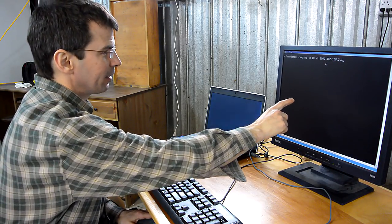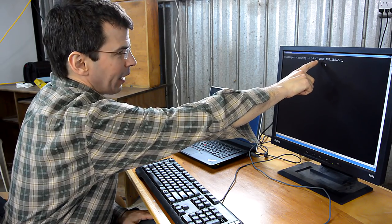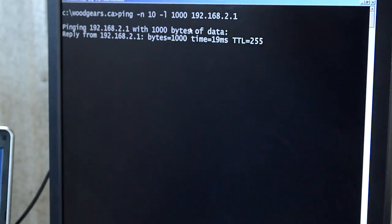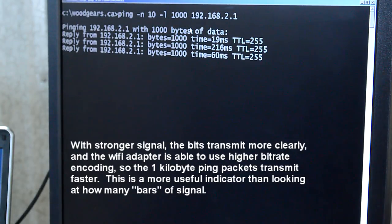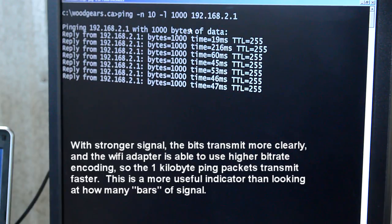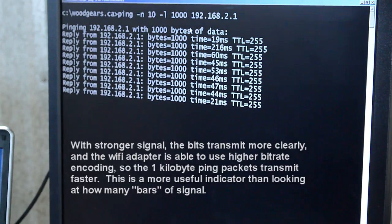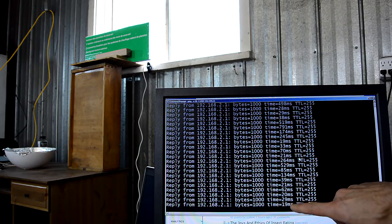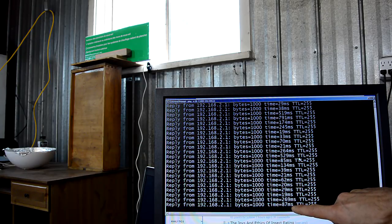So I'm testing how good the signal is by sending 1000-byte ping packets directly to their router rather than to the internet. And right now a lot of packets are taking about 50 milliseconds. You can see quite a lot of variation but we're still getting pings down to 20-30 milliseconds sometimes.